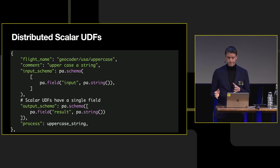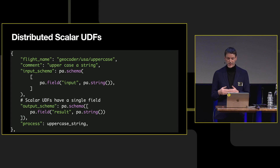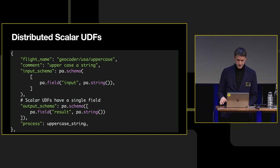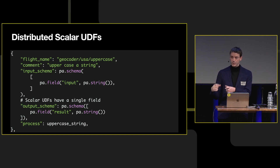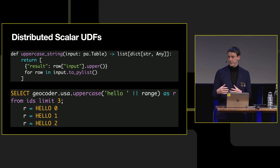The interesting thing about scalar functions is we're not invoking the remote scalar function one-to-one. We're actually going to get the vectorized batches and do those requests — it's not a one-to-one call to the remote RPC endpoints, which leads to a lot of great efficiency gains. Another term for this is distributed scalar UDFs. Here's a simple example: a flight that uppercases a string. In Python, using PyArrow (pa), the input is a string, the output is a string, and process is a reference to the function that performs the operation. It returns a list of rows with a dictionary called result that just uppercases the values.